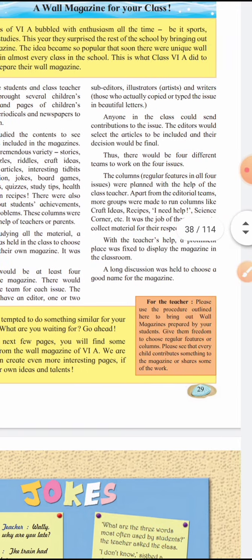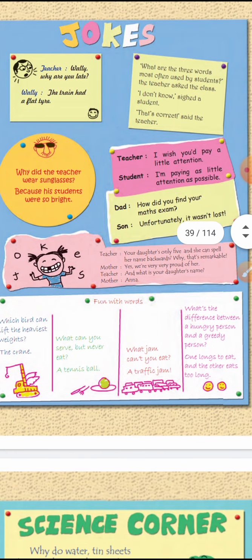Now look — here the jokes section is given. On a chart paper, different jokes are written and drawn. The first joke in the magazine: Teacher asks Wally, 'Why are you late?' Wally answers, 'The train had a flat tire.' — meaning the train's tire went flat, which is a joke in itself since trains don't have tires.